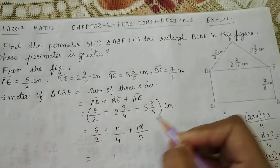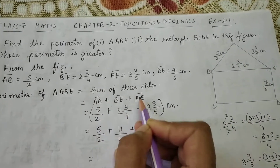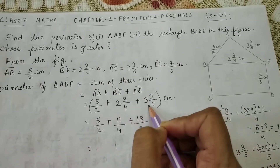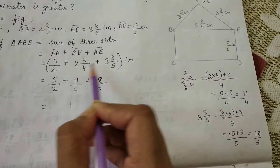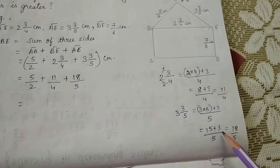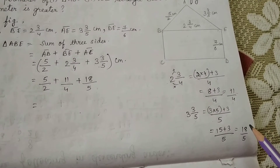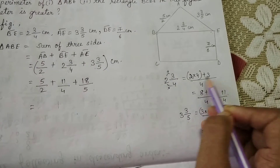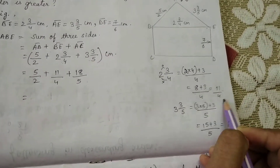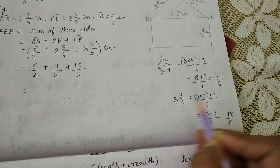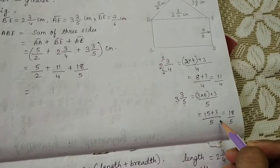The three sides are AB + BE + AE. AB = 5/2, BE = 2 and 3/4, AE = 3 and 3/5. These two are mixed fractions, so we must convert them to improper fractions. For 2 and 3/4: keep denominator 4, then 4×2 + 3 = 11, giving 11/4. For 3 and 3/5: keep denominator 5, then 5×3 + 3 = 18, giving 18/5.